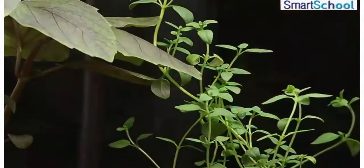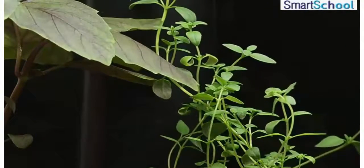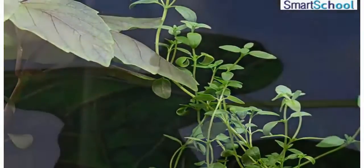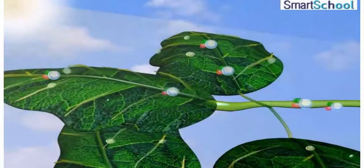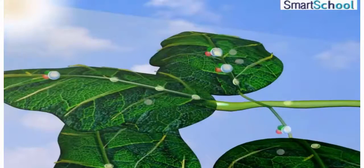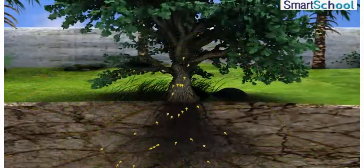You might be thinking whether the food is made in all parts of a plant or only in certain parts. Actually leaves are the food factories of plants. It means synthesis of food occurs in leaves, so all the raw materials must reach the leaves.